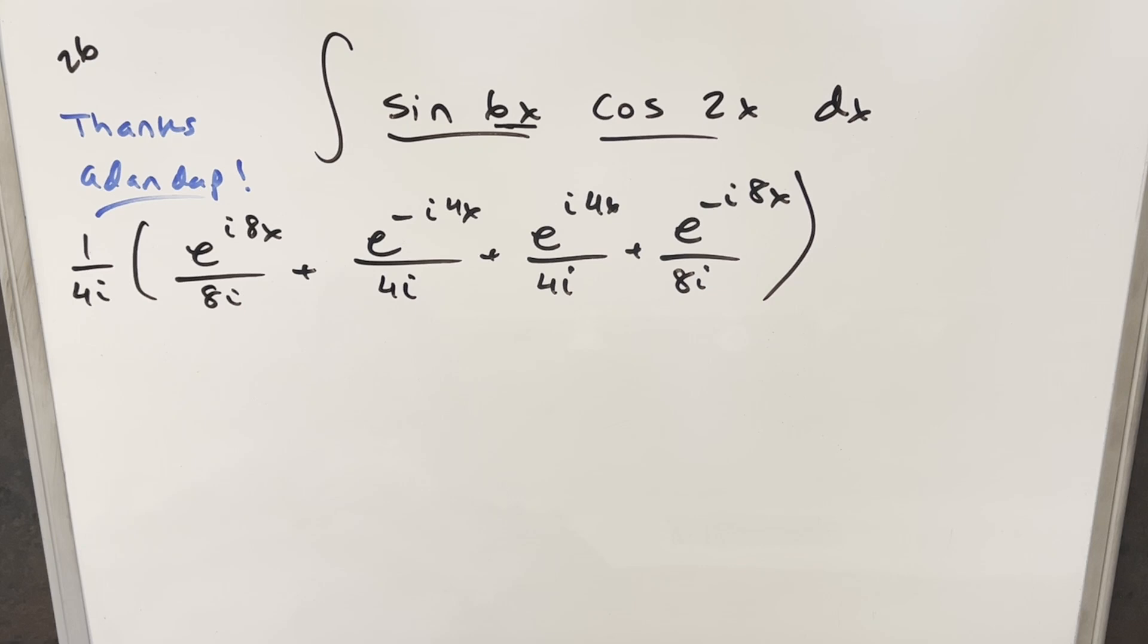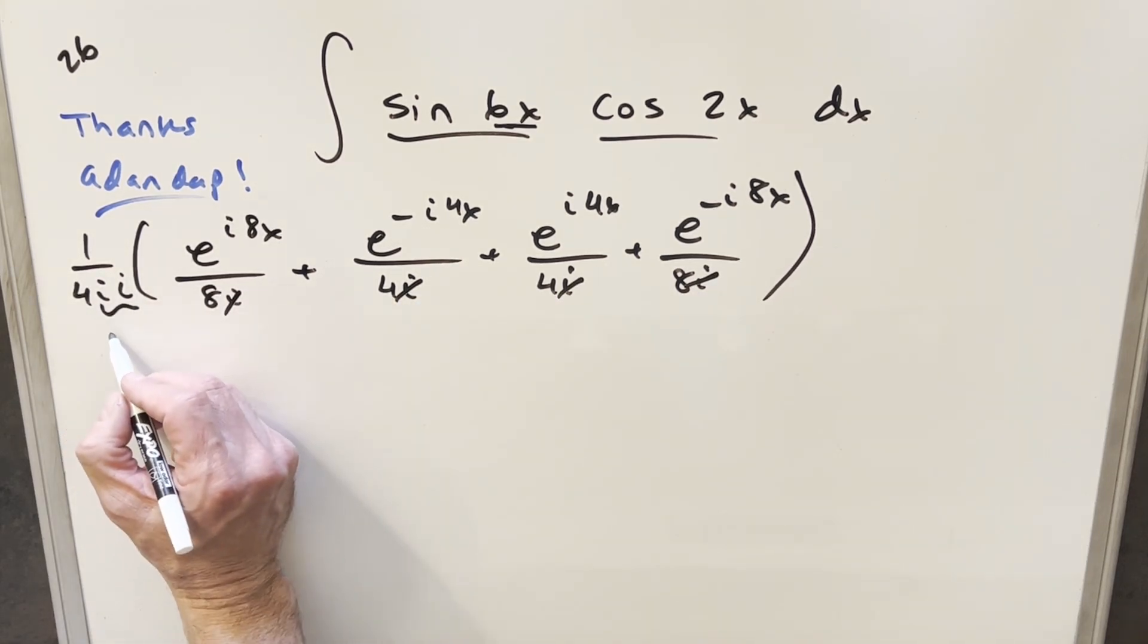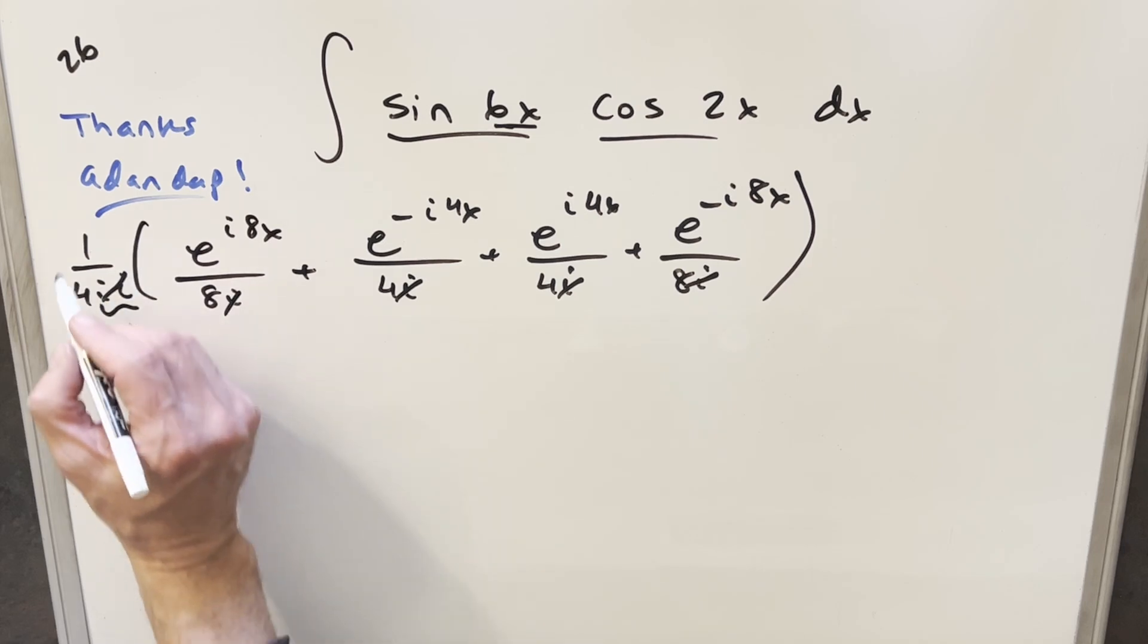Now from here, let's just see if we can get some simplification to clean this up. Now notice we've got an i in the denominator everywhere. So what I'll do is I'll factor that i out of every single term here. But then we'll have i times i. That's going to just give me minus 1. So we can cancel that off and just kind of bring a minus sign over there.